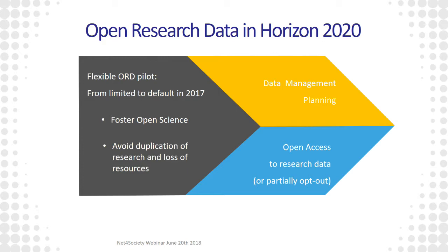Where does the open research data policy come from? In the first phase of Horizon 2020 it was a flexible pilot, and the main motivation was to avoid duplication of research and loss of resources. Very quickly this was channeled into two complementary elements: data management planning and open access to research data.